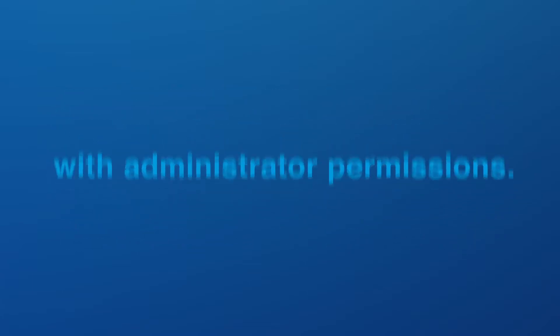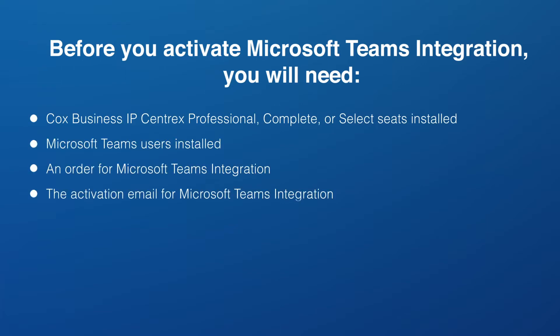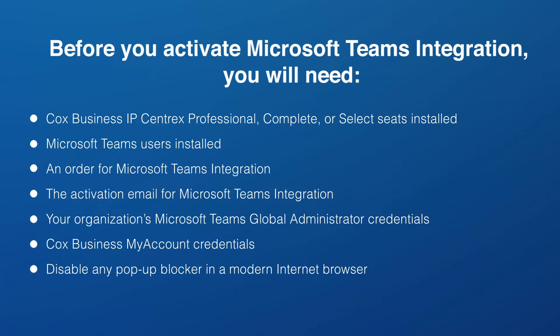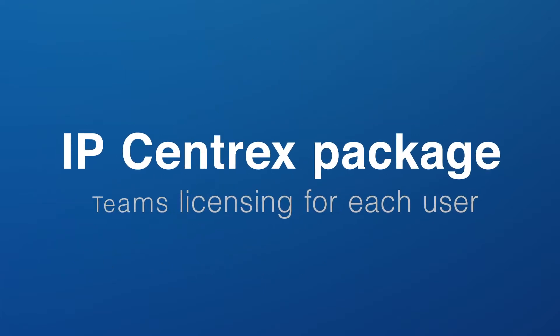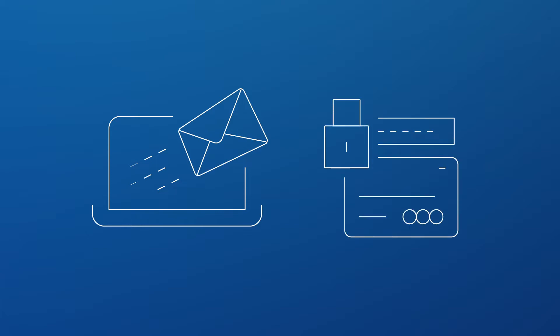Let's start with a quick review of what you'll need as the administrator to successfully complete activations. If you don't have all of the items listed, you should contact your IT department, reseller, or systems integrator to obtain this information. It won't be possible to complete the activations without all of the information. To get started, you'll need to purchase and install an IP-Centrex package as well as Teams licensing for each user. You must also have placed a Microsoft Teams integration order for each user, and you will need the resulting activation email that was sent to the administrator. Now is the right time to disable any pop-up blocker in a modern internet browser.